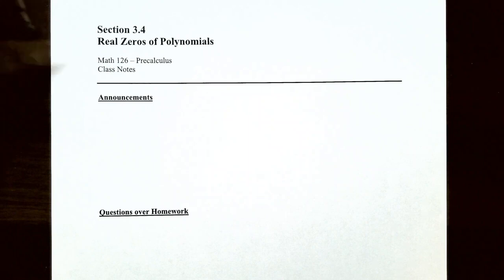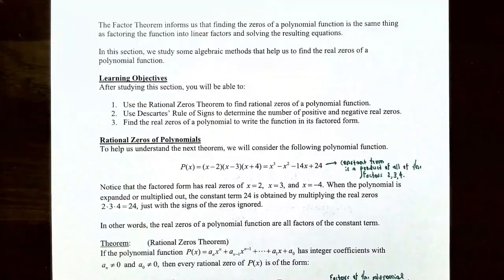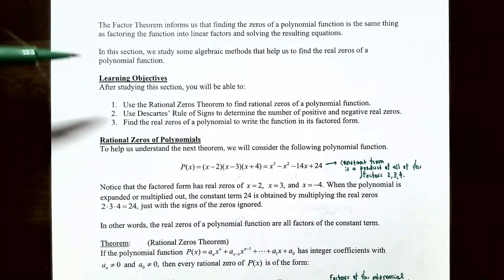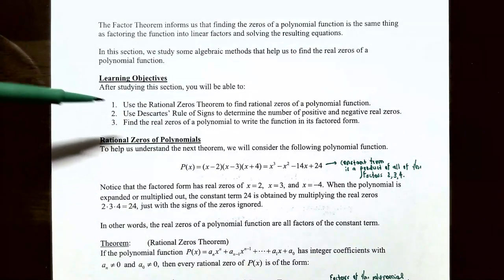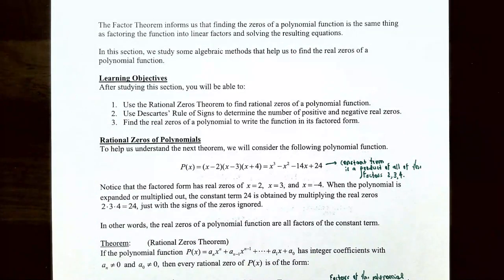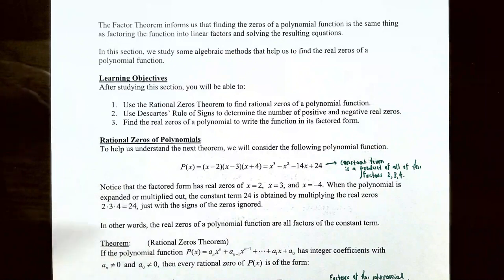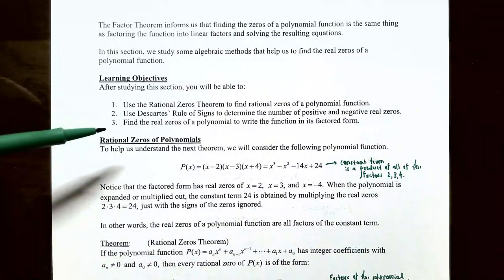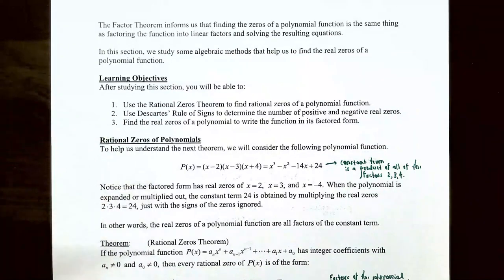Hey everyone, it's Professor Permanent and we're going to finish up our discussion on real zeros of polynomials. In the previous video we talked about how to use the rational zeros theorem to find the rational zeros of a polynomial function, and we also used the rational zeros to help us find the real zeros and write the function in its factored form.